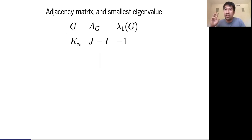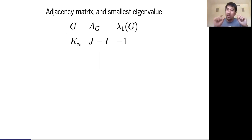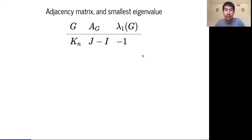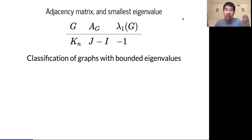Here's an example. Suppose your graph G is a complete graph on N vertices. The adjacency matrix is almost the all-ones matrix, but with the diagonal reset to zero — so it's J minus I. The smallest eigenvalue of J minus I is minus one, and this minus one has multiplicity N minus one. There is a theme in spectral graph theory which is to classify graphs with bounded eigenvalues.